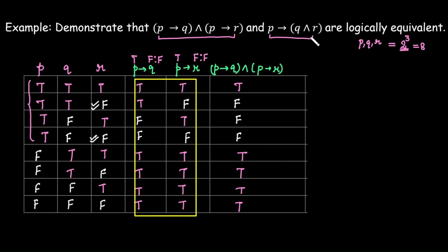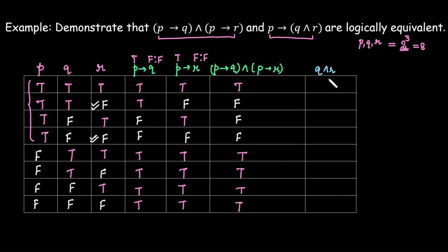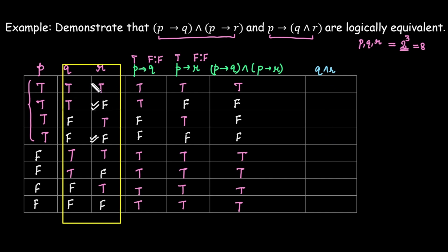Now we evaluate the second compound proposition: 'P implies (Q AND R)'. First, compute 'Q AND R', which is true only when both Q and R are true. Checking: case 1 true-true gives true, case 2 true-false gives false, case 3 false-true gives false, case 4 false-false gives false, case 5 true-true gives true, cases 6, 7, 8 are false.